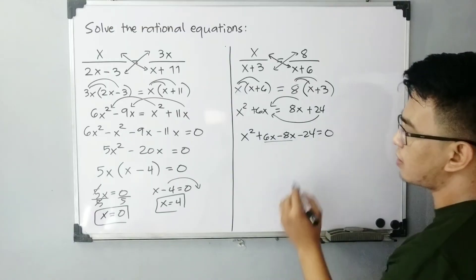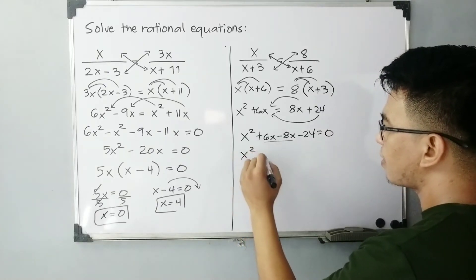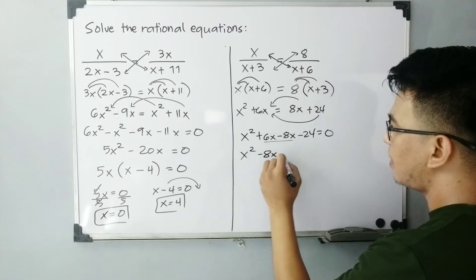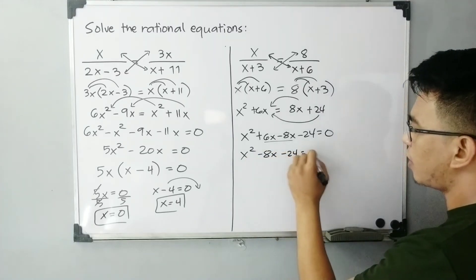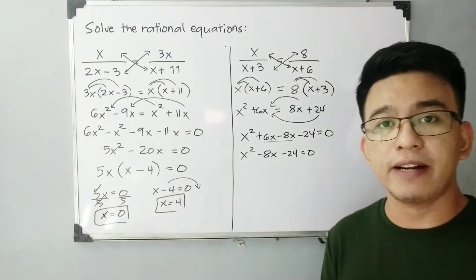It will give us the standard form of x squared plus 6x minus 8x minus 24 is equal to 0. And then combining these terms, because they are like terms, you have x squared minus 2x minus 24 is equal to 0. And considering to solve for this equation, we can use directly factoring.